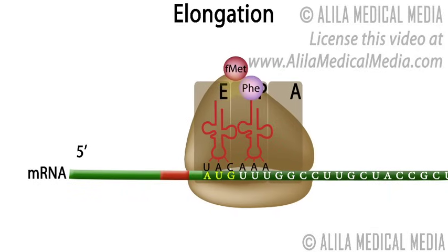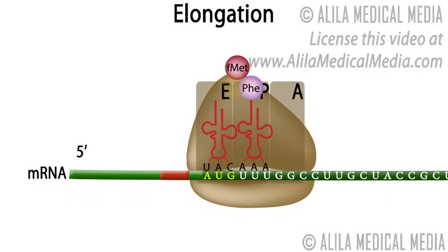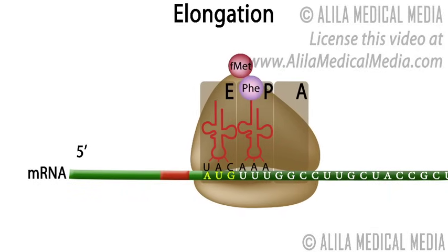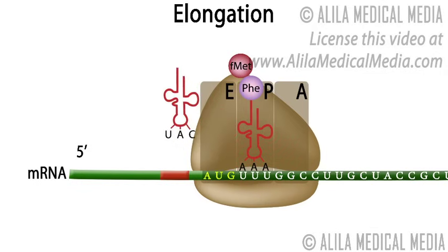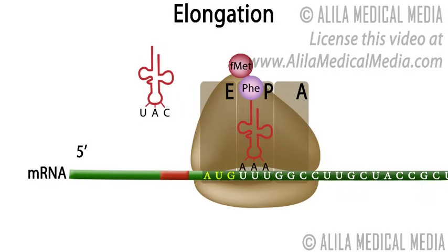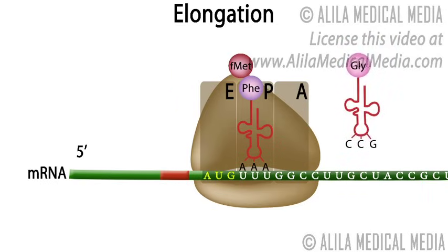As a result, the empty tRNA is now in the E site and the peptidyl tRNA is in the P site. The A site is now unoccupied and is ready to accept a new tRNA. The cycle is repeated for each codon on the mRNA.